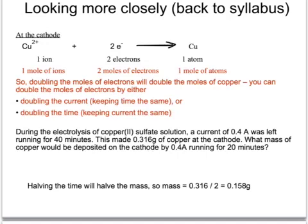Here's a question. During the electrolysis of copper sulfate solution, a current of 0.4 amps was left running for 40 minutes. This made 0.316 grams of copper at the cathode. What mass of copper would be deposited at the cathode if 0.4 amps was running for 20 minutes? The number of amps is the same — it's the number of minutes which is halved. So if the number of minutes is halved, the number of moles of electrons will halve, which means the mass of copper will halve. The mass goes down from 0.316 to 0.158 grams.